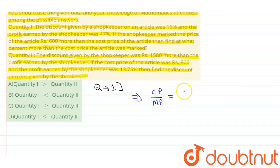Cost price upon mark price equals 100 minus discount percentage divided by 100 plus profit percentage. So, 100 minus 16 divided by 100 plus 47. Solving this ratio, we get 84 divided by 147, which simplifies to 4:7. Here we can see that 4 has been marked up to 7, which is 75 percent. Quantity I is 75 percent.